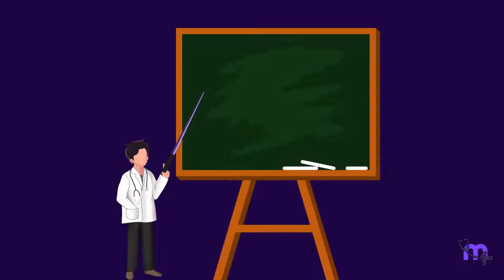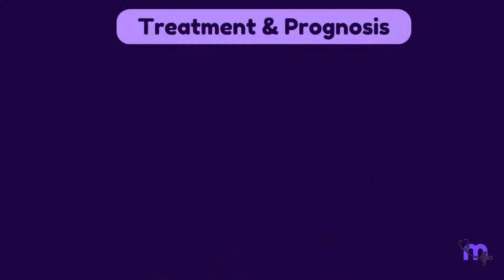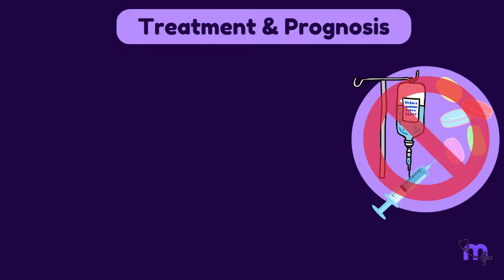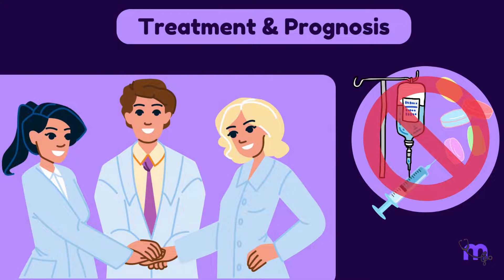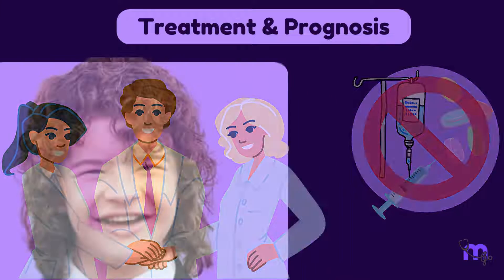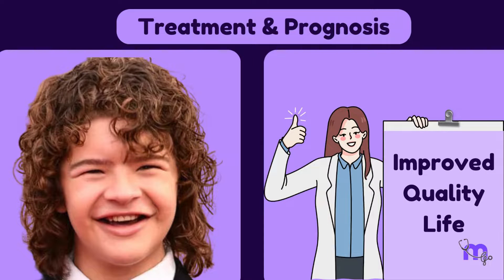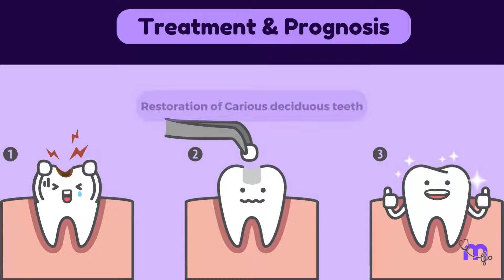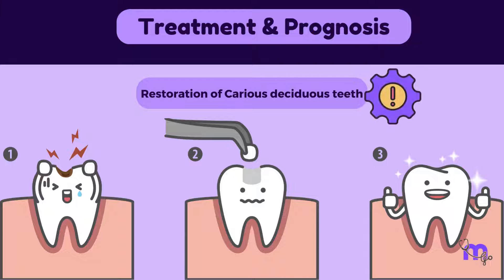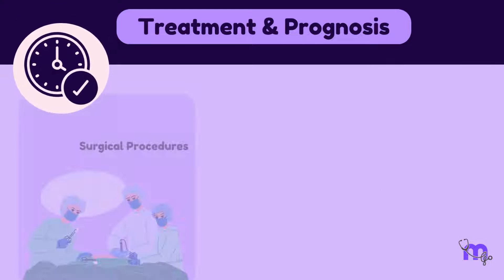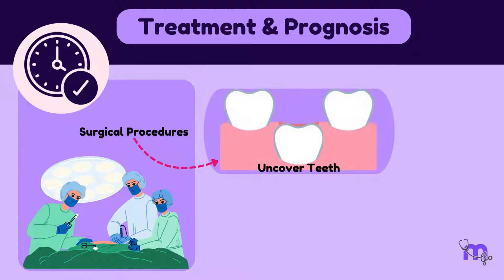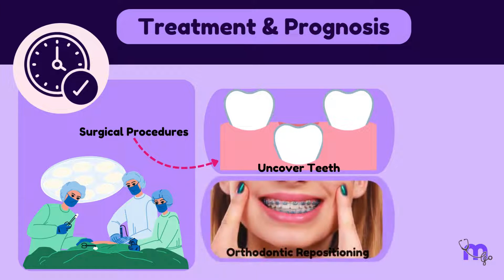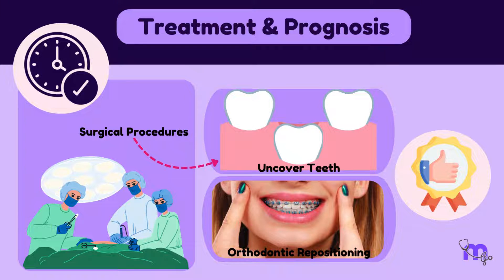When it comes to treatment and prognosis, it is important to note that there is no specific cure. A collaborative treatment approach involving various specialists would greatly improve the quality of life for individuals with this condition. Care for oral conditions, such as restoring carious deciduous teeth, is crucial. By carefully timing surgical procedures to uncover teeth and utilizing orthodontic techniques for repositioning, excellent functional results can be achieved.